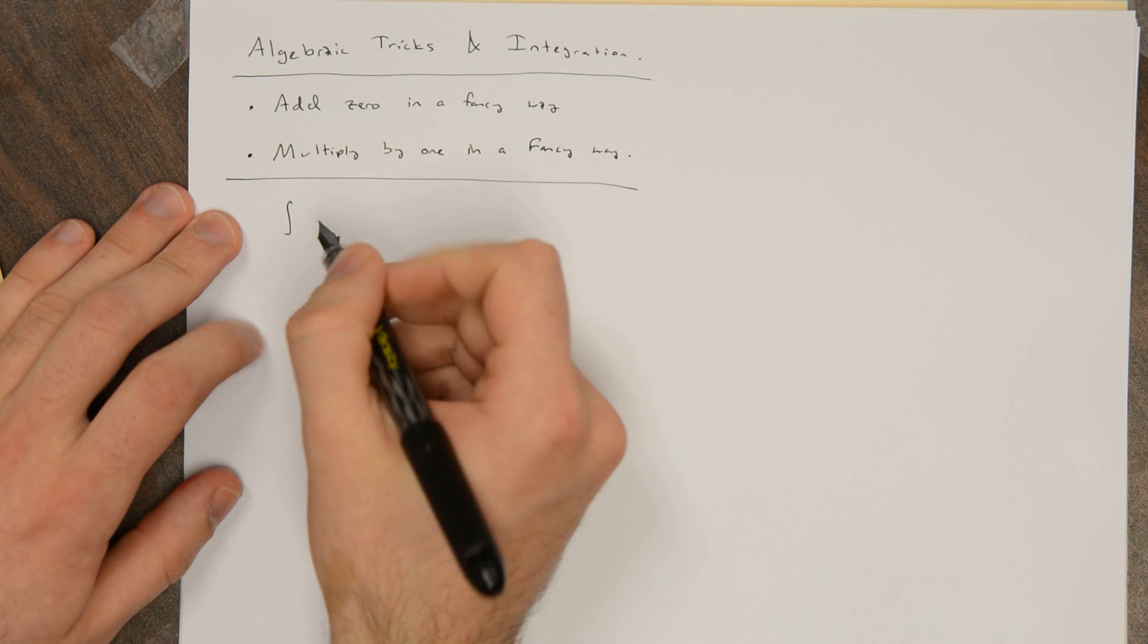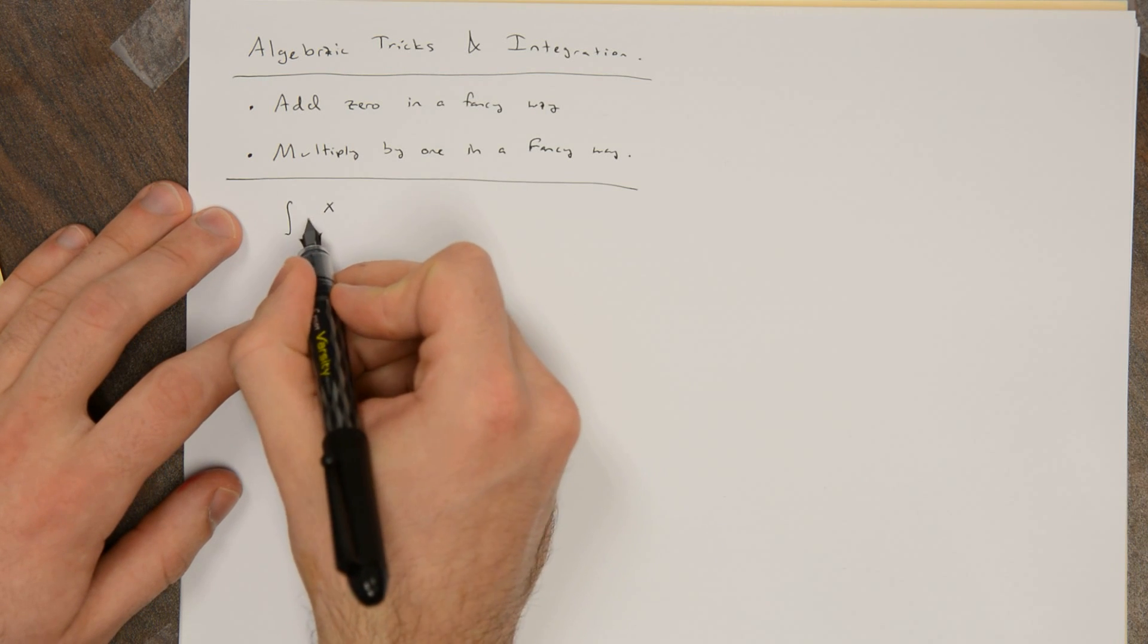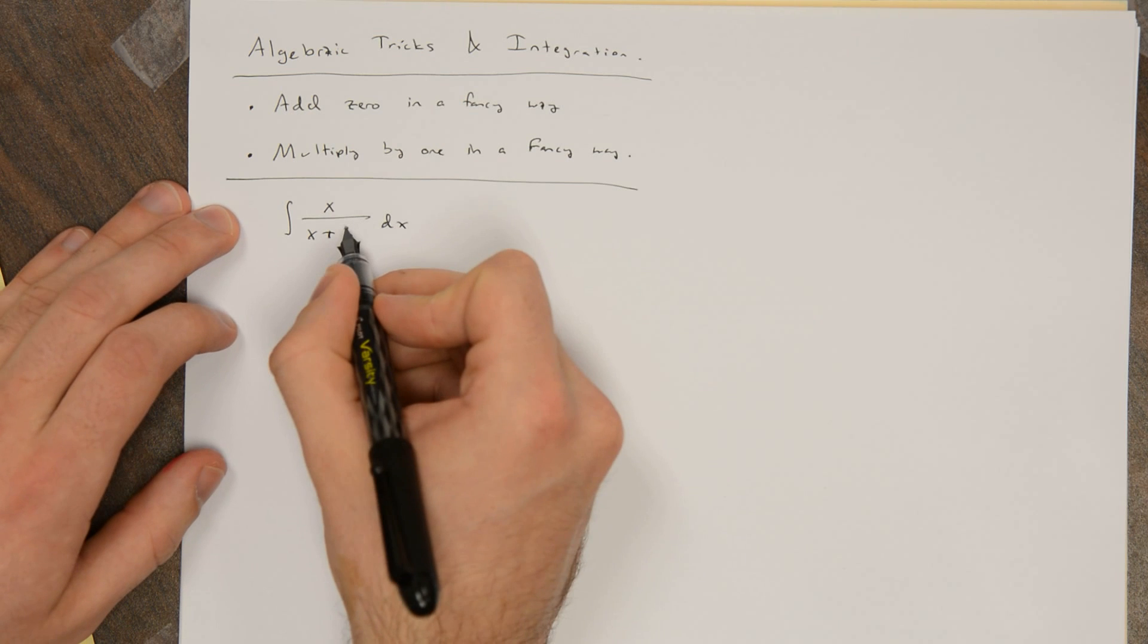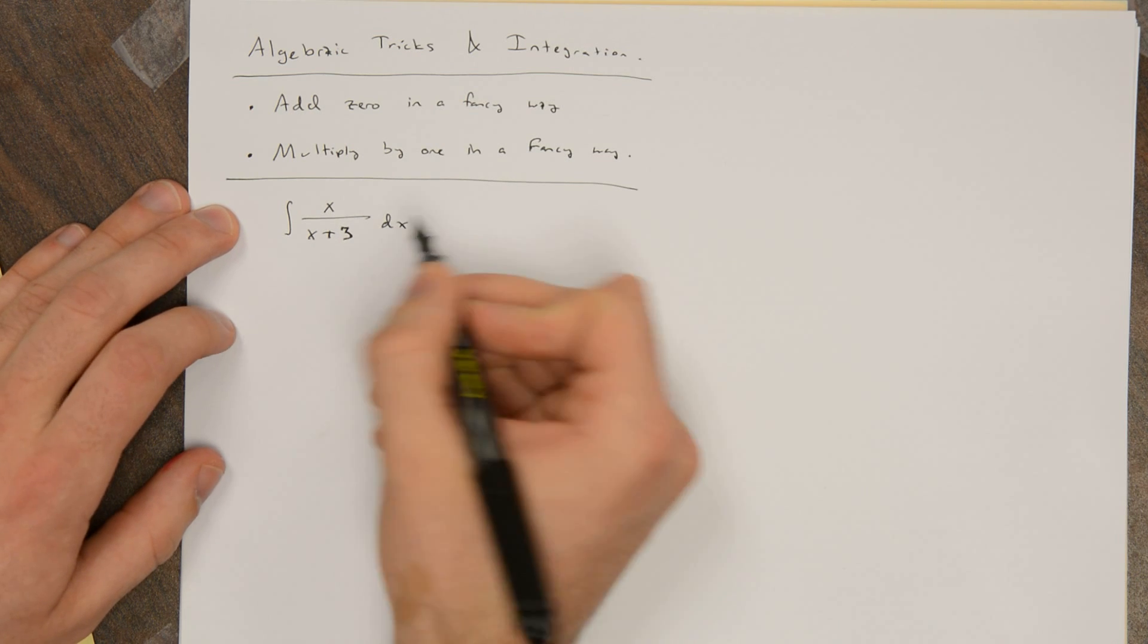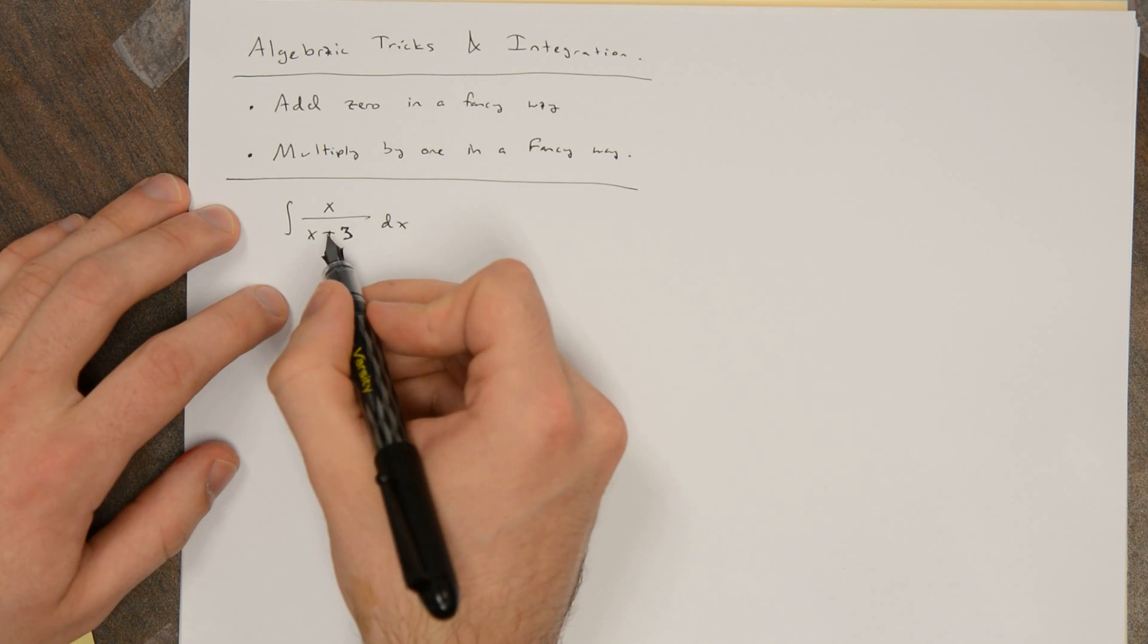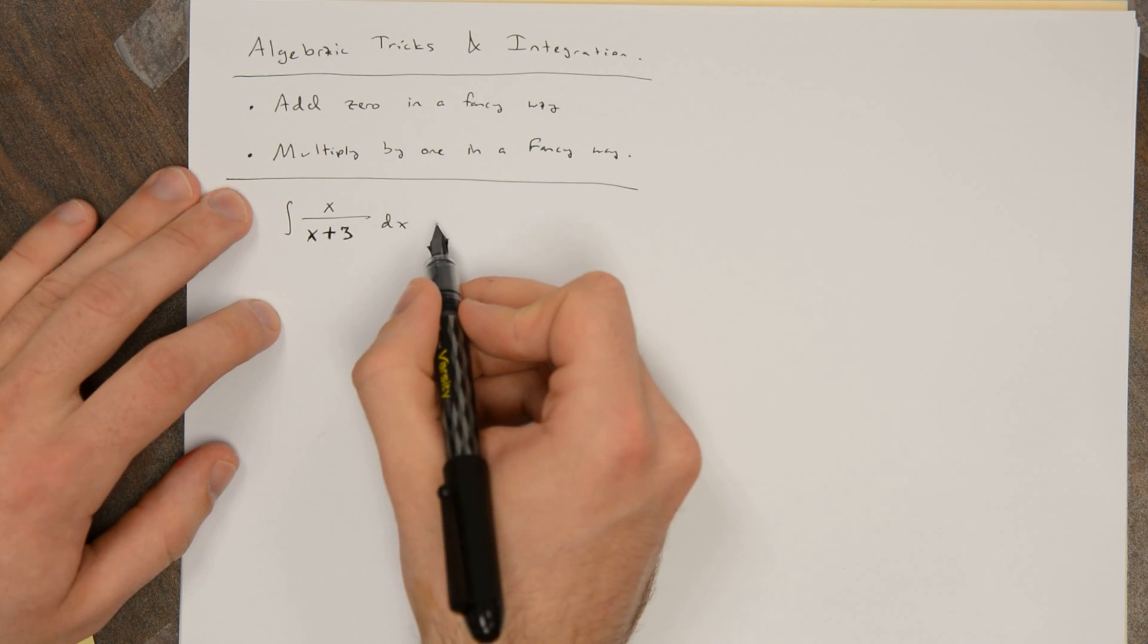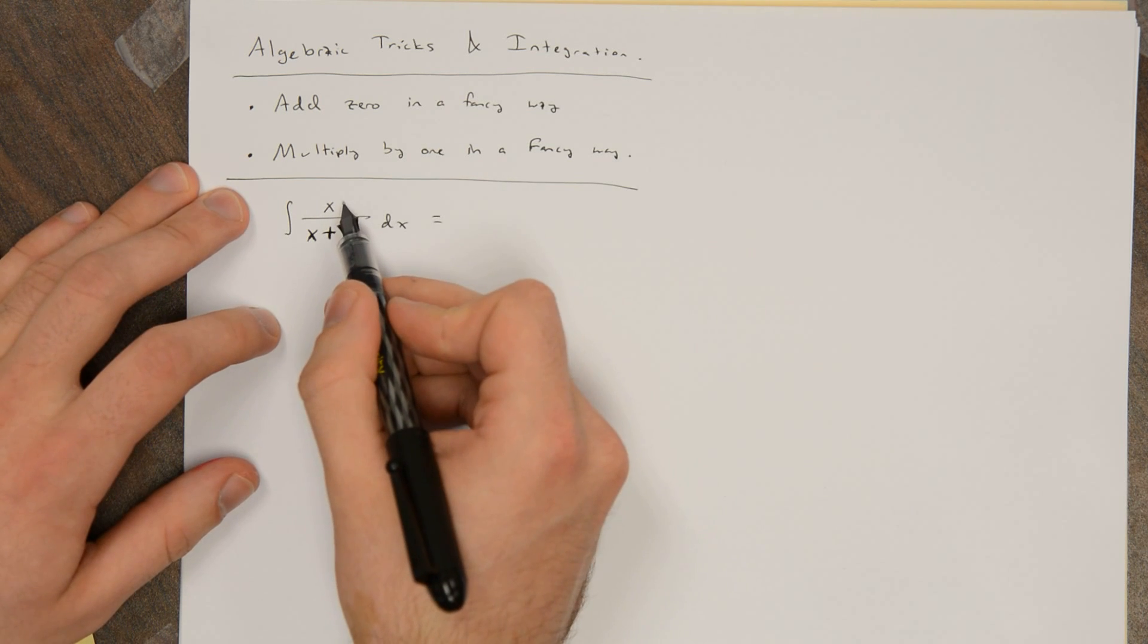Like, for instance, the integral of x over x plus 3 dx. You normally would want to sub for the denominator here, but then you have to deal with the numerator. But a very easy way to deal with this is by saying,